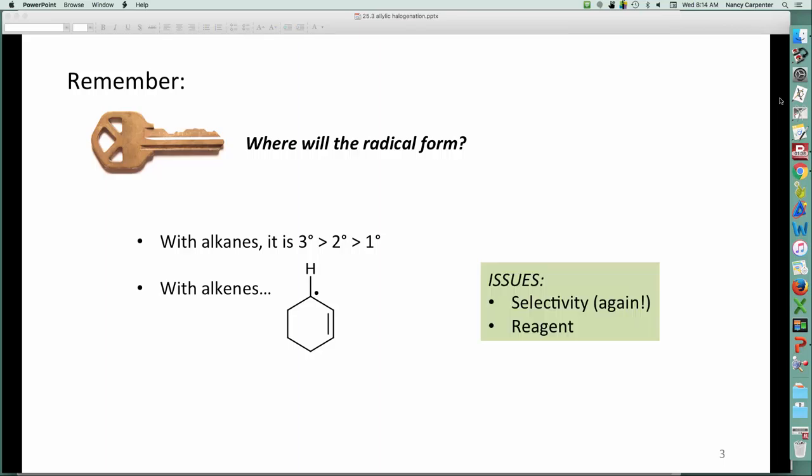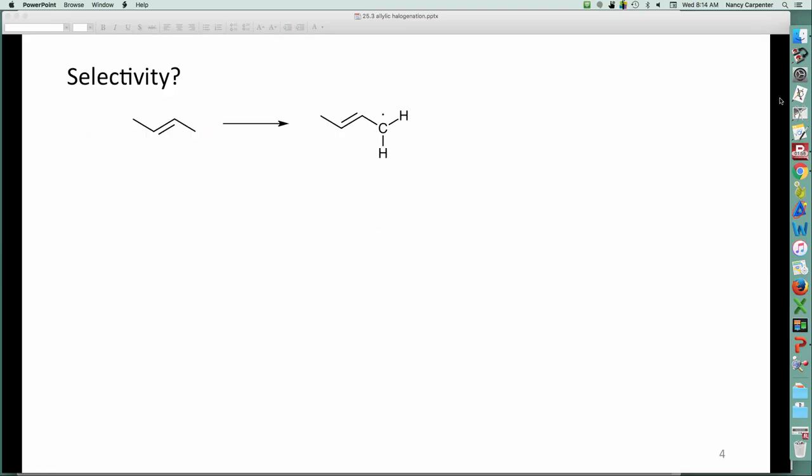So that means we have issues because sometimes the two resonance contributors for that allylic radical might not be identical. And it also means we have to pay really careful attention to which reagent we need to use. So the selectivity issue is illustrated nicely here. So I pluck off one of these three allylic hydrogens. And what do I get? Well, of course, I get the allylic radical right here. But wait just a doggone minute. That allylic radical is delocalized, right?